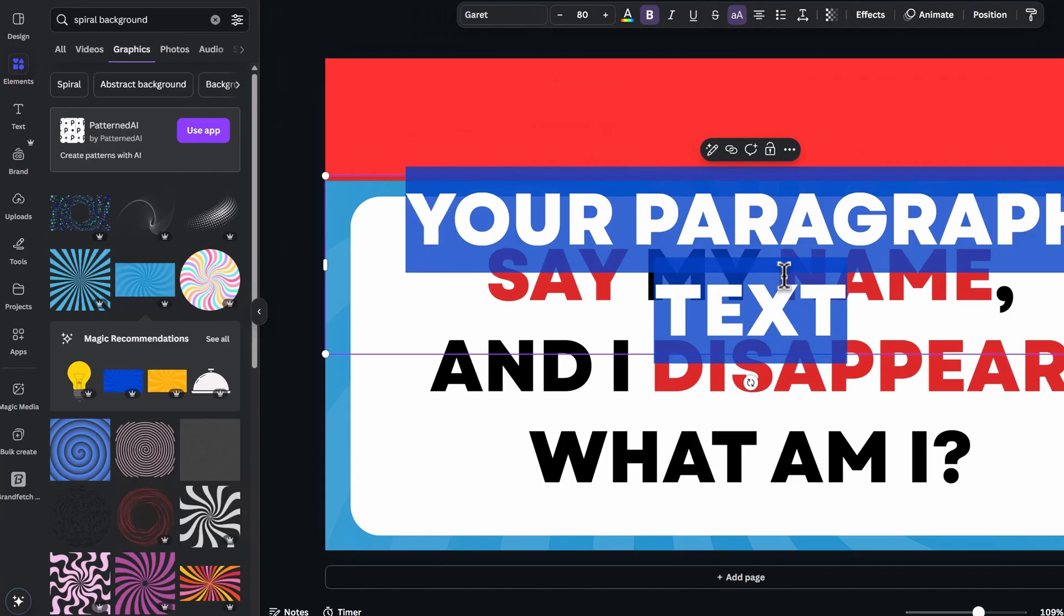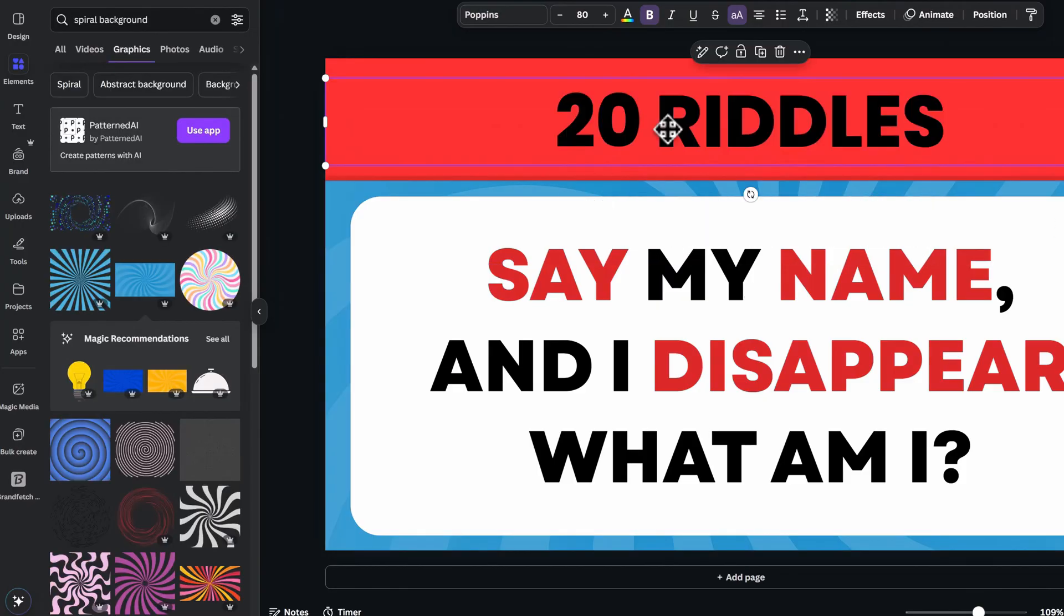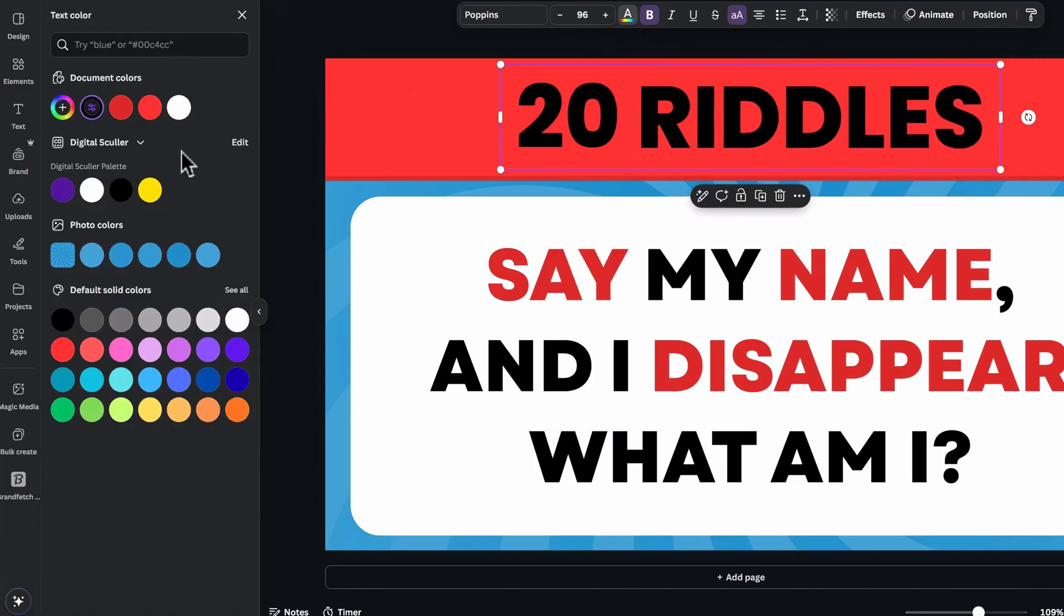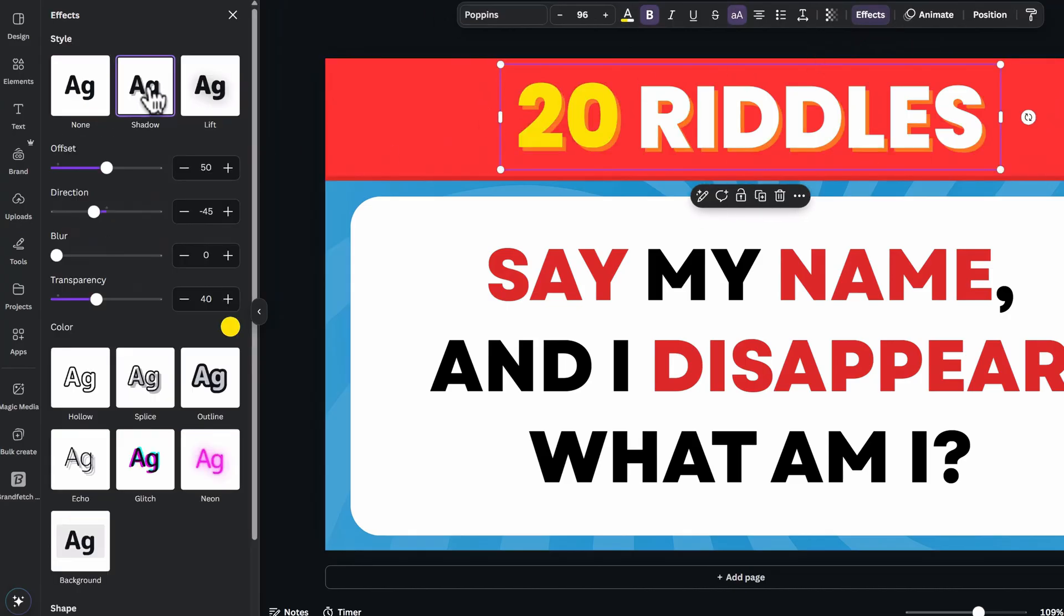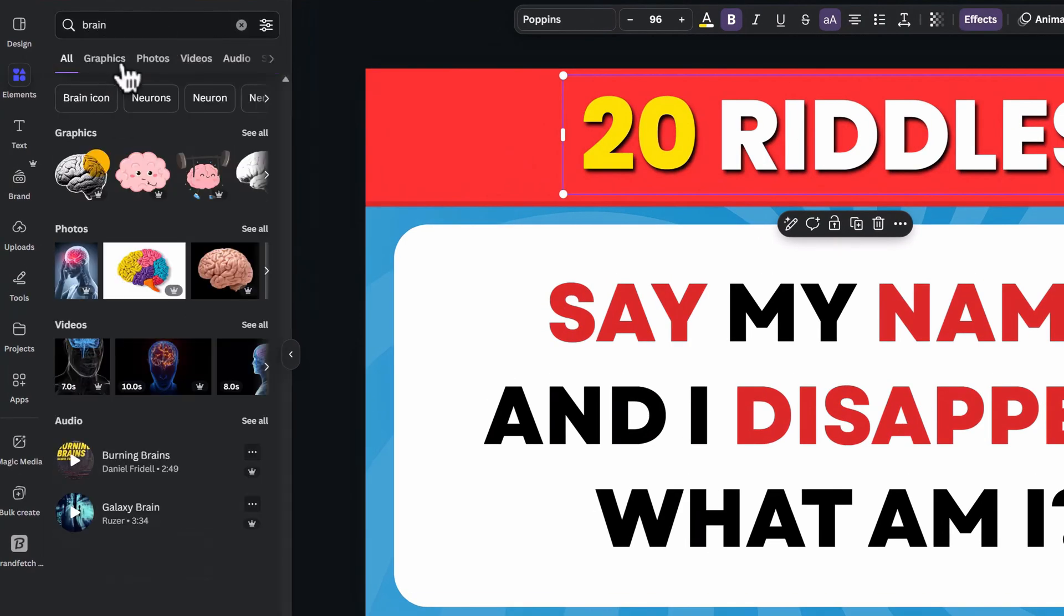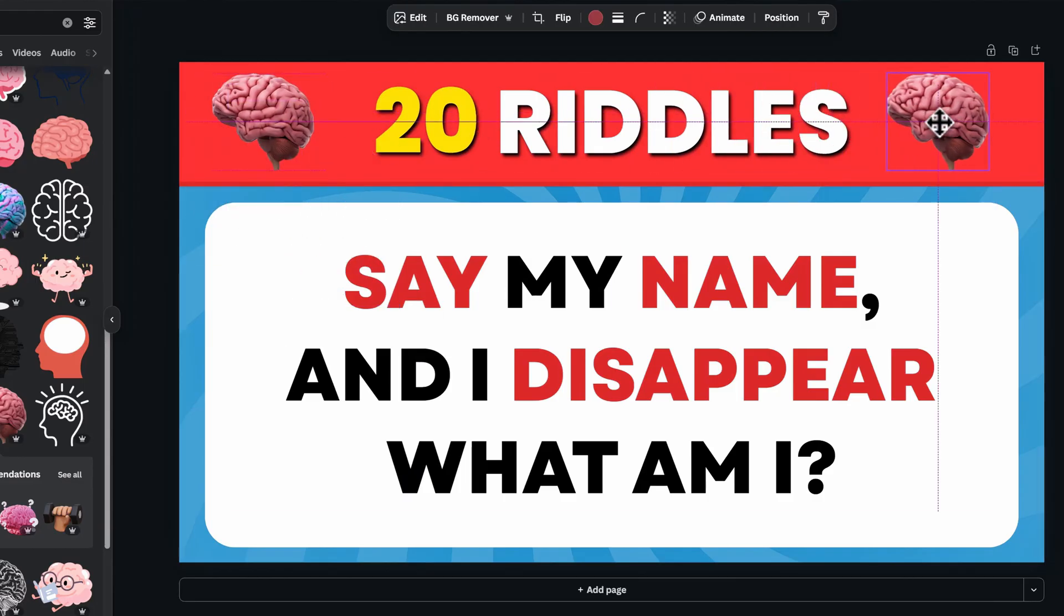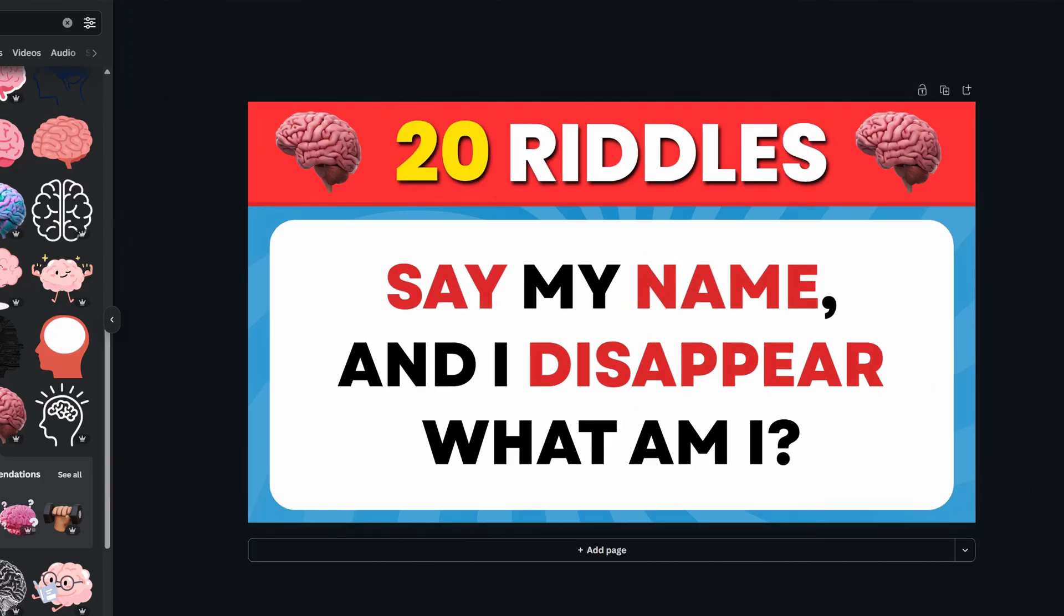Add another text for the top and change the font to poppins. Replace it with the number of riddles you have in your video, such as 20 riddles. Drag it up and reduce the text area. We can increase the font again to 96. Change the color to white and highlight the number to change the color to yellow. We need an effect for this text, so add a shadow effect and change it to black. Increase the transparency to 100 and increase the blur to 35. Play with the direction as well and make the offset 35. Lastly, find a brain graphic on the elements tab and pick one of the results. Scale it down, then place it on the left. Duplicate it and place it on the right. And I think we still have some room to increase the font to 104. And with this we are done with the thumbnail design.